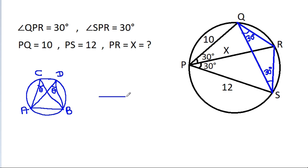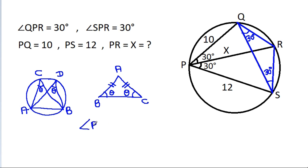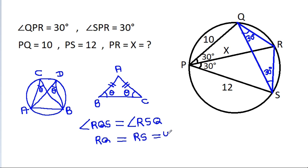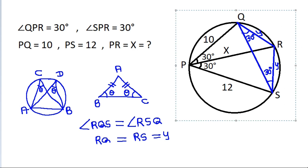And in any triangle ABC, if two angles are equal, then the opposite sides are equal. We have angle RQS equal to angle RSQ, so RQ will be equal to RS. Let's call this Y, so RQ is Y and RS is Y.